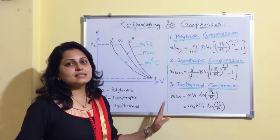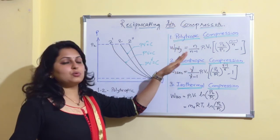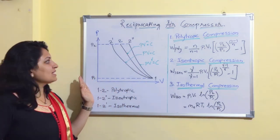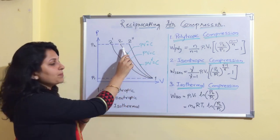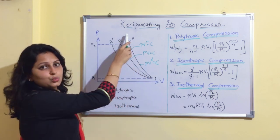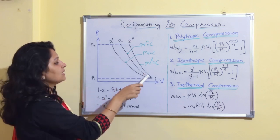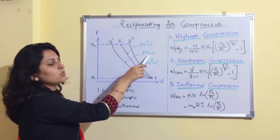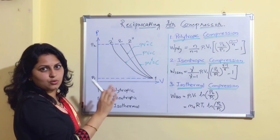The next topic is types of compression processes. Type 1 is polytropic compression, Type 2 is isentropic compression, and Type 3 is isothermal compression. From the PV diagram, process 1 to 2 is polytropic compression following PV^n = constant; process 1 to 2'' is isentropic compression following PV^γ = constant; and process 1 to 2' is isothermal compression following PV = constant. The minimum amount of work required is in the case of isothermal compression.